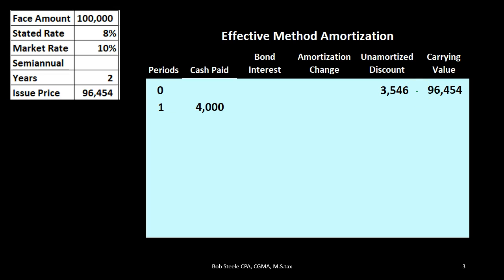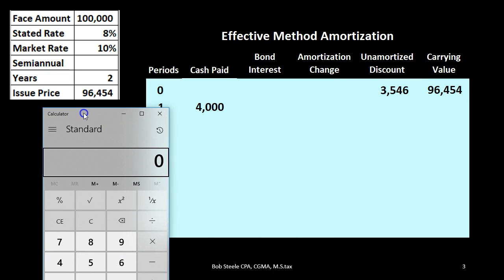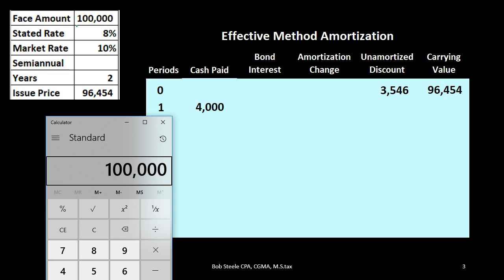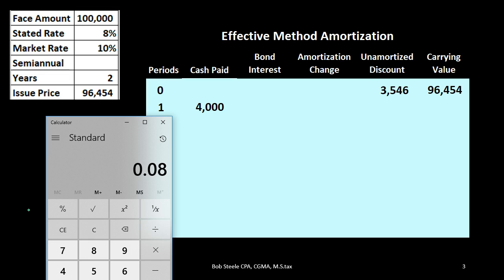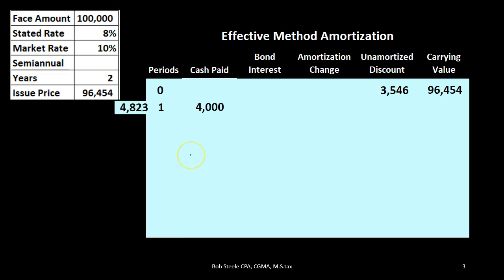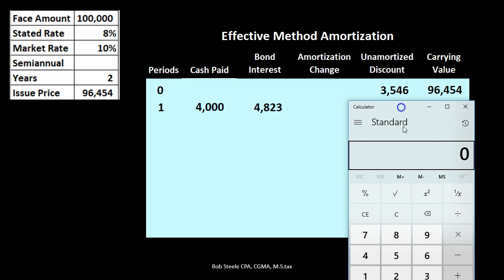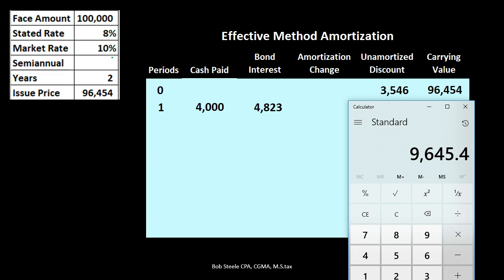Under the first period, the cash paid is $4,000. That's straightforward — it's just on the contract. The bond is $100,000 times the stated rate of 8% (0.08), divided by 2 for six months, giving $4,000. The bond interest expense, however, is calculated as the carrying amount — $96,454 — times the market rate of 10% (0.1), divided by 2, giving us $4,822. We can also express that as 0.1 divided by 2 times $96,454.